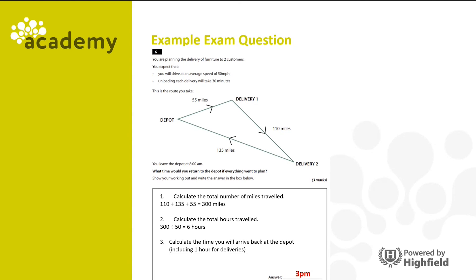Did you get it right? The answer is 3pm. Now there are three marks in this question, so you need to show your working out in order to get the full three marks: calculating the total number of miles traveled, then calculating the total hours traveled, and calculating the time you would arrive back at the depot.